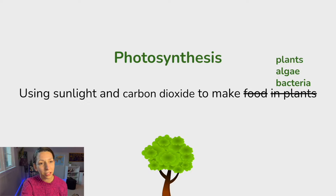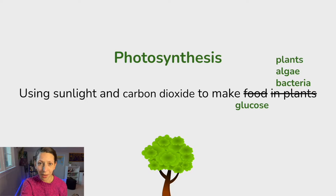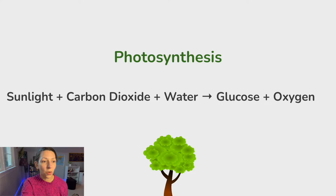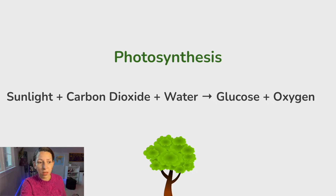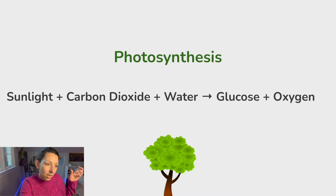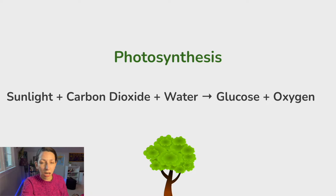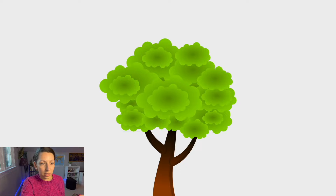And it's not just food that they're making. Specifically in high school, we're going to start talking about glucose, that organic compound, its carbohydrate, C6H12O6. So our basic equation for photosynthesis is: sunlight plus carbon dioxide plus water yield glucose and oxygen. Plants are taking in sunlight, carbon dioxide, and water, and then they are making glucose and oxygen during the process of photosynthesis.